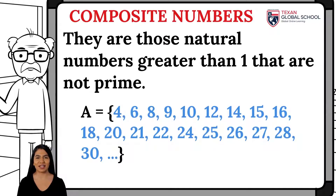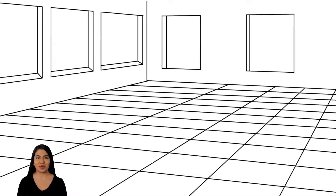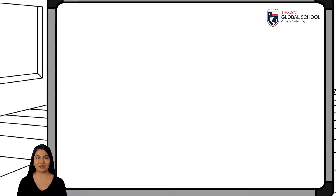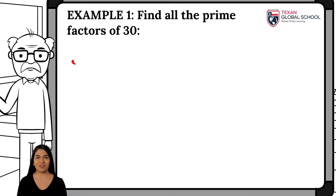In set A, we represent some examples of composite numbers such as 4, 6, 8, 9, and 10. Let's look at an example: we must find the prime factors of 30.